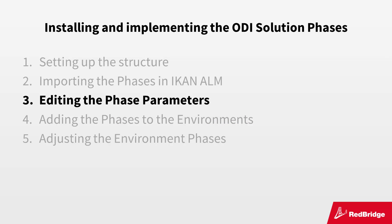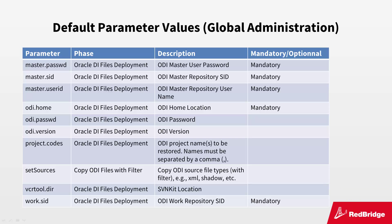We have imported the phases, and next we need to verify and, if needed, modify the default values of the phase parameters. Here you can see an overview of the different parameters you most likely will need to modify in the Global Administration section. Some parameters are set to mandatory by default — mandatory means that the parameters will be automatically created when adding the phase to a level or build or deploy environment. To keep things simple for this demo, we will set most of the parameters to mandatory and use the same values for the different environments as much as possible.